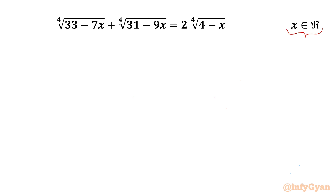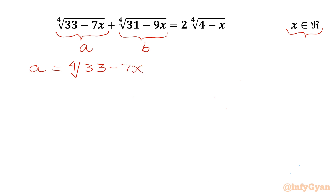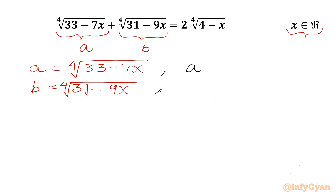Let's get started with a straightforward substitution. The first radical term I will consider a and the second radical term I will consider b. So a equals the 4th root of (33 minus 7x), and b equals the 4th root of (31 minus 9x). Raising both sides to the power 4 gives a⁴ = 33 minus 7x, and b⁴ = 31 minus 9x.